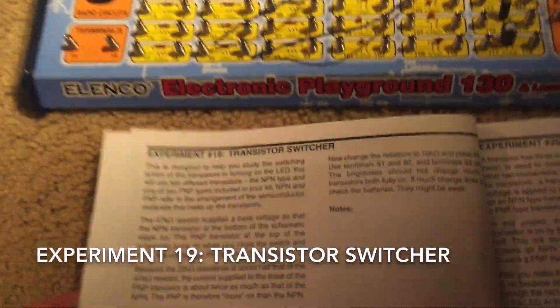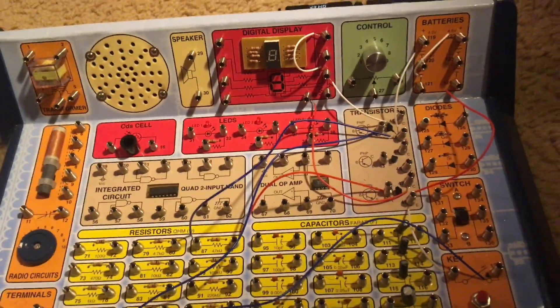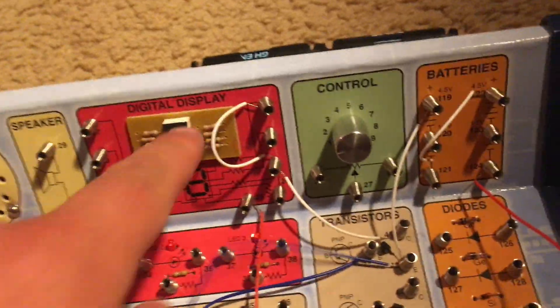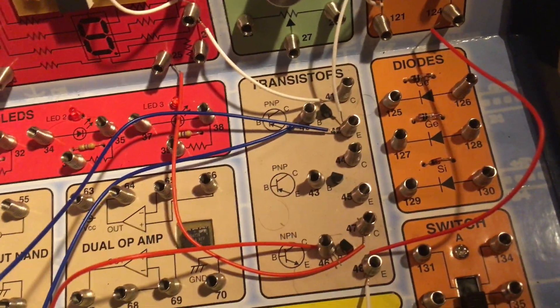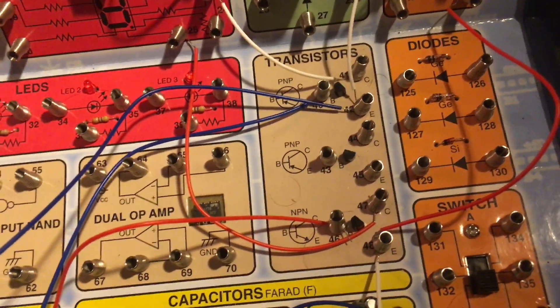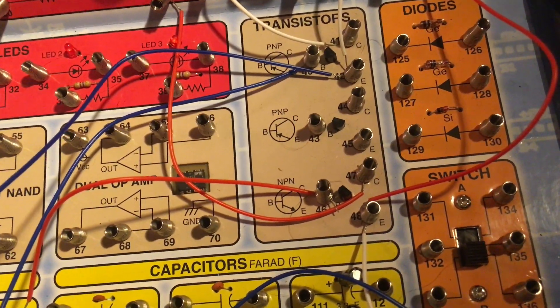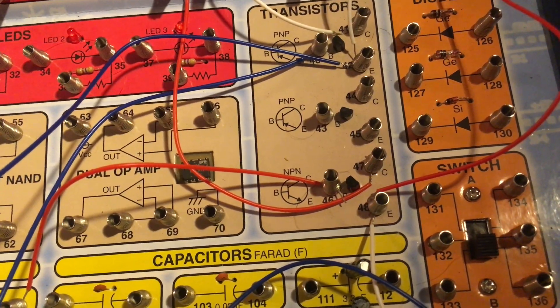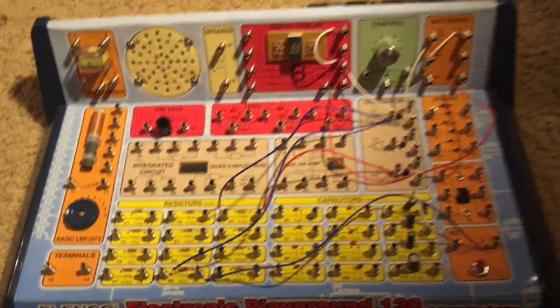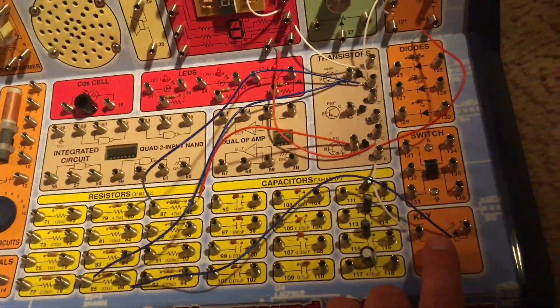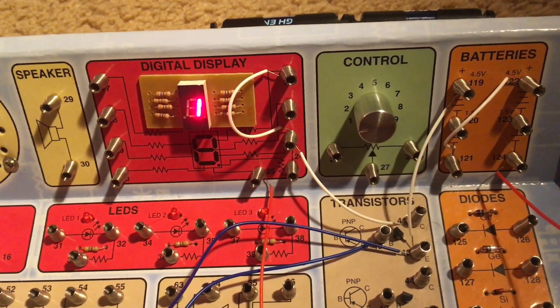Experiment 19 is transistor switcher. In this circuit you will see the difference in performance of the seven segment display when I change resistors and transistors. Now we have one of two PNP transistors in use as is the NPN transistor which is being used as well. I am going to hold down the key switch and the seven segment display will show the number one.